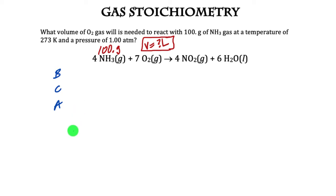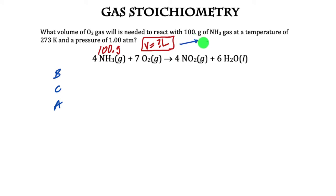Let's start with the example. I have 100 grams of ammonia and I'm trying to figure out how many liters of oxygen are needed. The problem didn't specify conditions for the volume of O₂, so we'll use liters. I also know that temperature and pressure are important for gases: the pressure here is 1 atm and the temperature is 273 Kelvin.